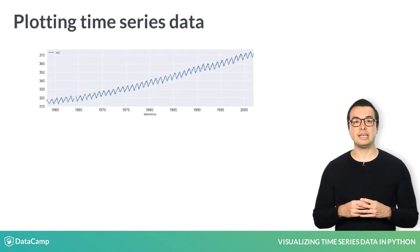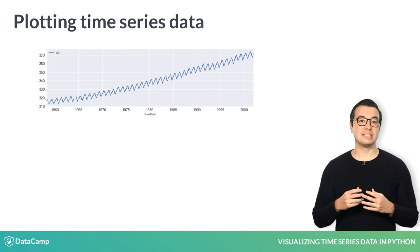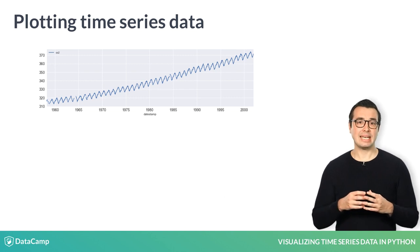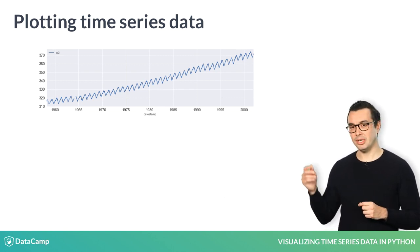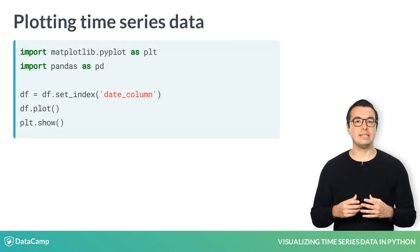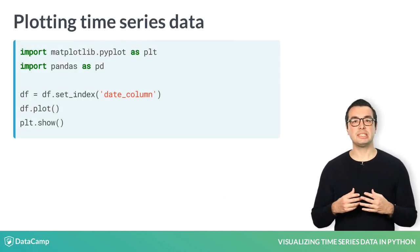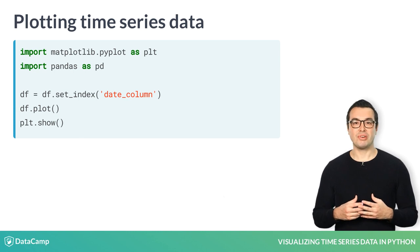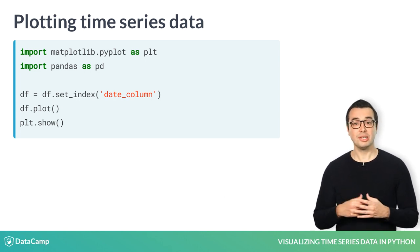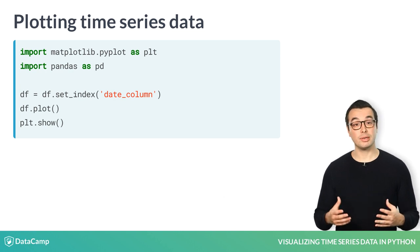In the case of time series data, if the index consists of dates, pandas will automatically call a separate function to format the x-axis nicely, as shown in the figure here. Therefore, it is always recommended to set the dates of your time series as the index of your DataFrame using the .set_index method. Once you have finished defining the parameters of your figure, call plt.show to display the current figure that you are working on.